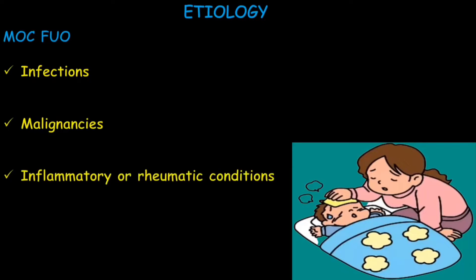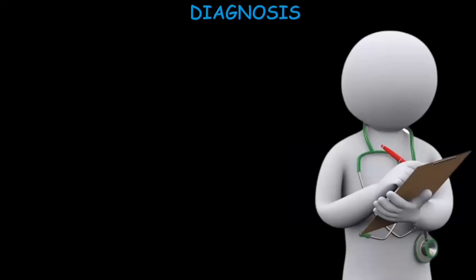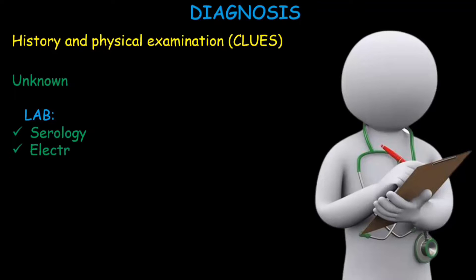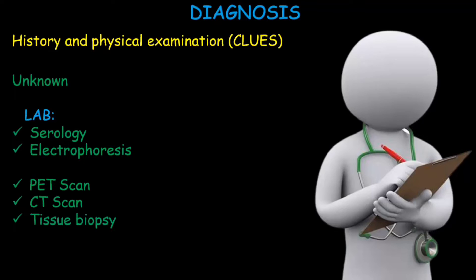The initial diagnostic approach to fever of unknown origin should focus on comprehensive history and physical examination to identify diagnostic clues for a target diagnosis. If the diagnosis remains unknown, we do lab studies, for example serology and electrophoresis, and other investigations such as PET scan, CT scan, and tissue biopsy should also be considered.